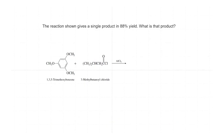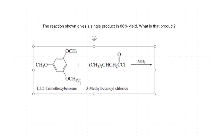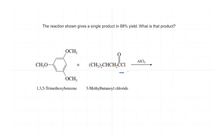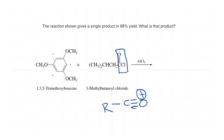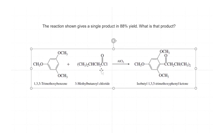The reaction shown gives a single product in 88% yield. Here we have an acid chloride which, in the presence of a Lewis acid, can produce the corresponding oxo-carbinium ion. Looking at 1,3,5-trimethoxybenzene, by the symmetry of the molecule, all three positions are equivalent. In the presence of aluminium chloride, electrophilic aromatic substitution occurs at one of these positions and the product formed is the corresponding ketone.